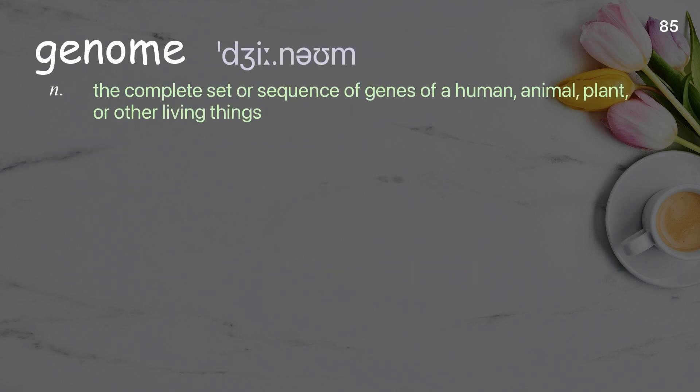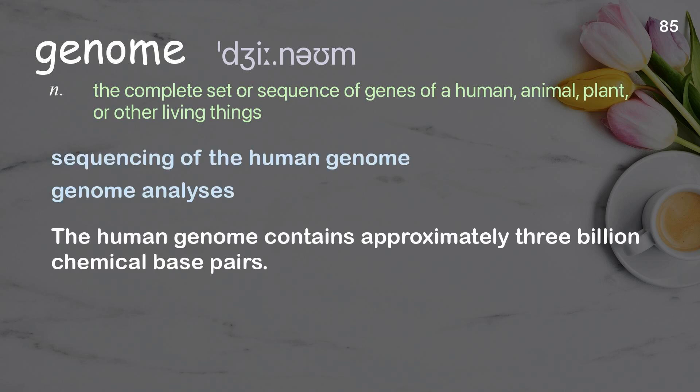Genome: The complete set or sequence of genes of a human, animal, plant, or other living things. Examples: Sequencing of the human genome, Genome analyses. The human genome contains approximately 3 billion chemical base pairs.